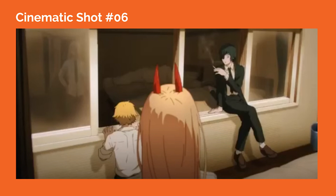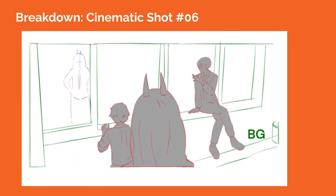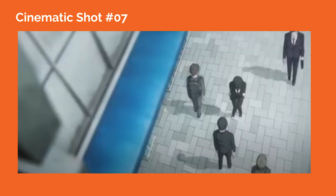In cinematic shot number six, the camera is placed higher above the back of Power's head, looking toward Denji and Himeno in the mid-ground against the row of windows. We see Power's reflection in the window on screen left. This shot is likely using a wider lens to give us a sense of the environment where the characters are staged.